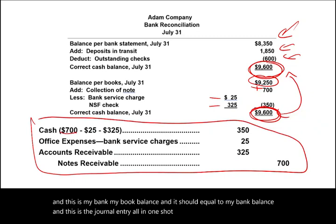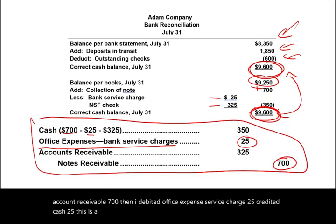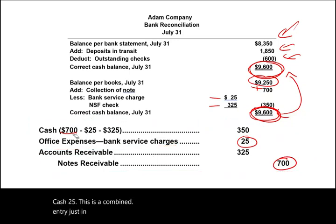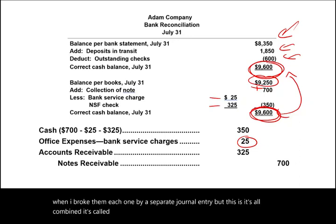The journal entries are: debit cash $700, credit notes receivable $700; debit office expense/service charge $25, credit cash $25; debit accounts receivable $325, credit cash $325. This is a combined compound entry. If you're not comfortable with this, go back and look at each one as a separate journal entry.